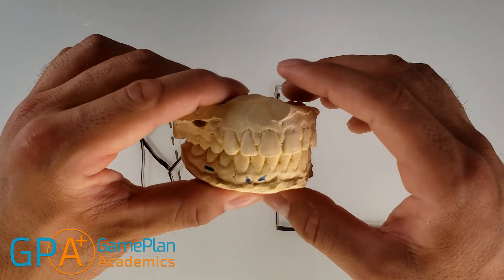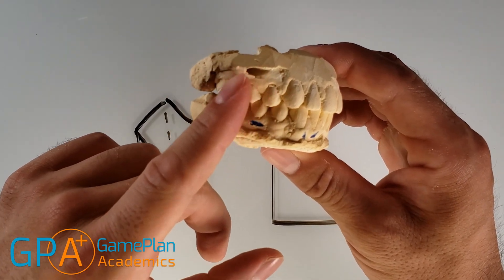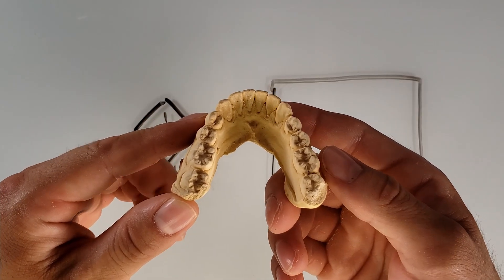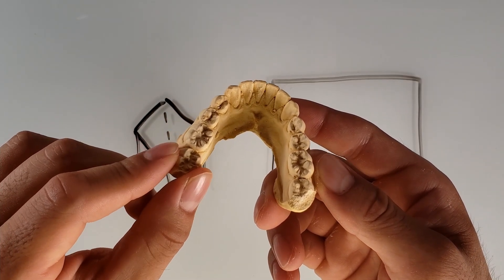All right, let's talk about the cusps and ridges of the molars. Again, this is going to be right behind the premolars back here. We're going to be doing this from your perspective with the mandible. So we're going to be using this second mandibular molar.